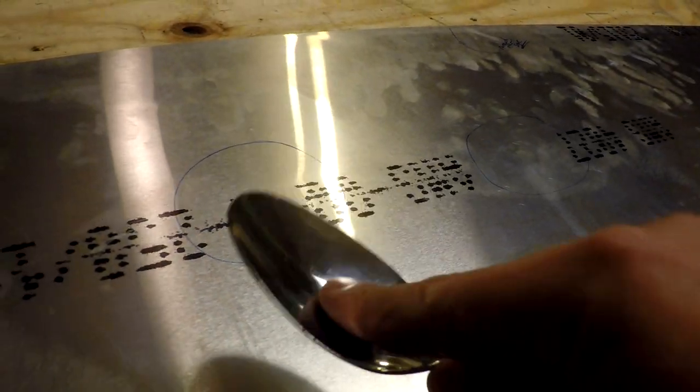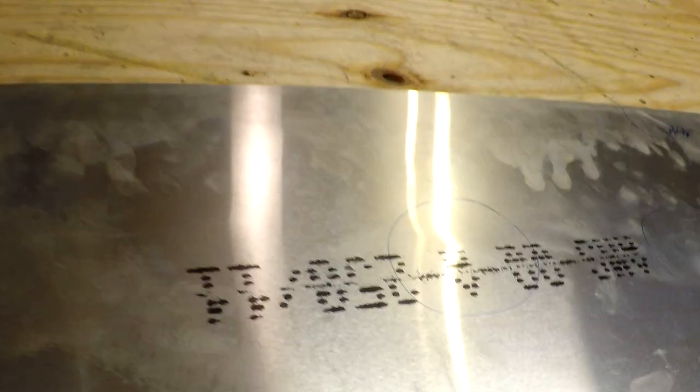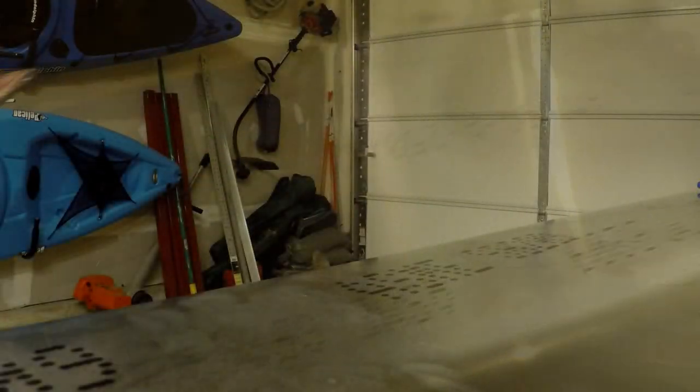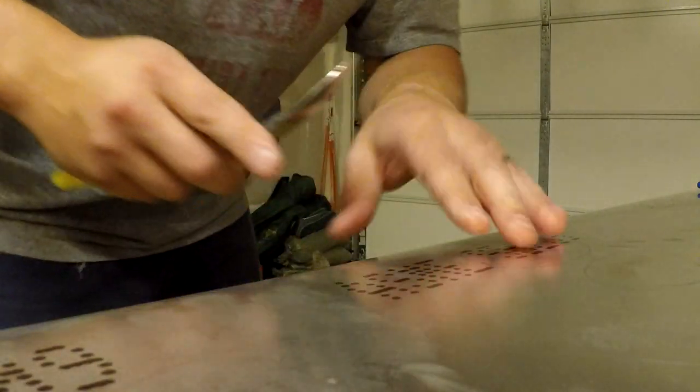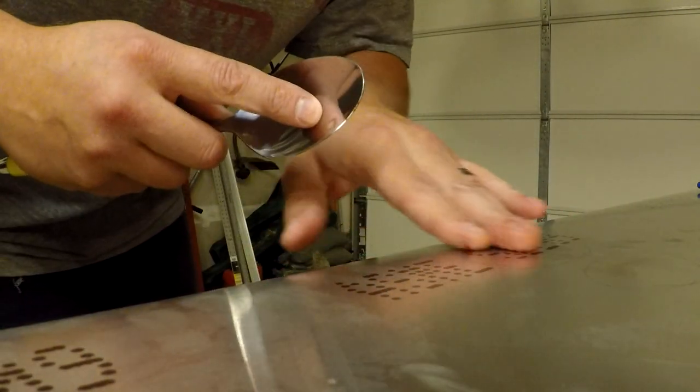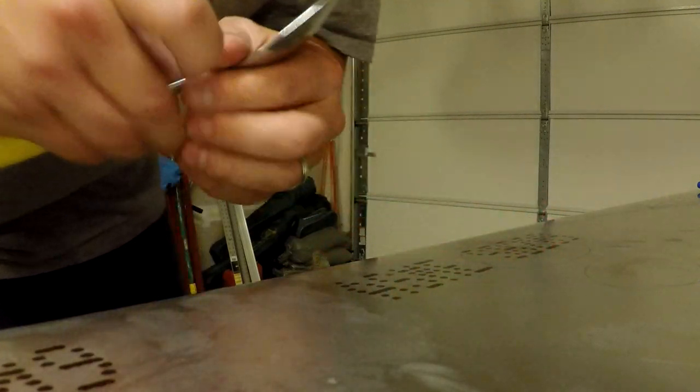I'll actually put the surface of the spoon right on top of the ridge and just try to work it back down into the flat part of the material. The camera's going to jiggle a little bit just because of where I'm at.